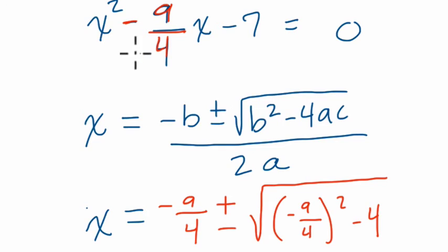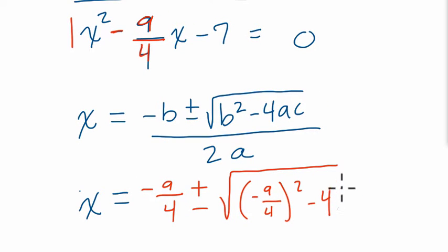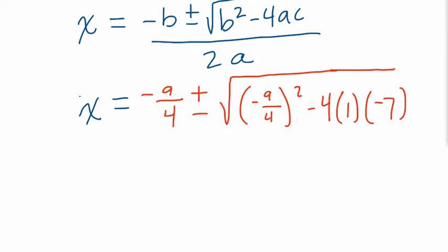Minus 4 times a times c. a is the coefficient of x squared, which is just 1. And c is negative 7. c is the constant value all by itself. And then we're going to divide that by 2 times a, or 2 times 1. So x is equal to this.